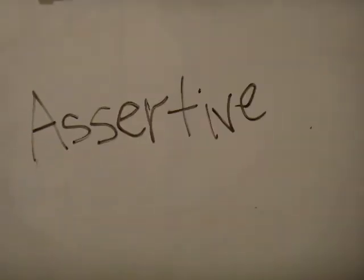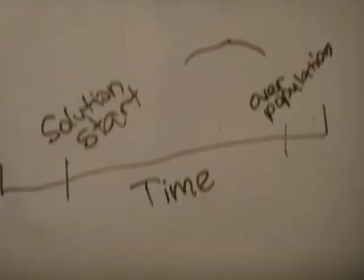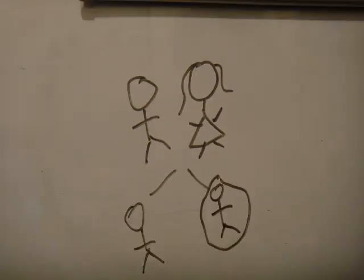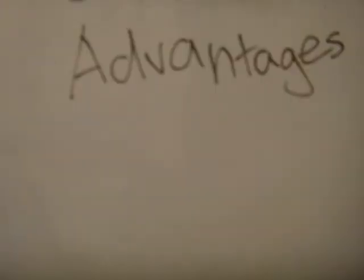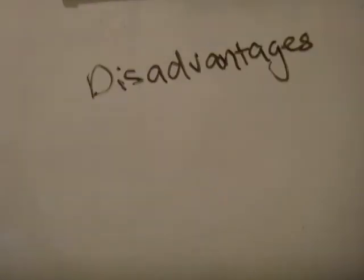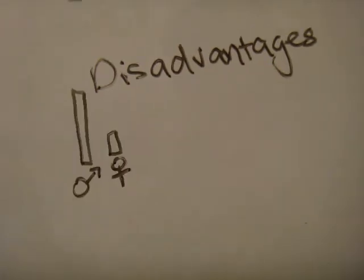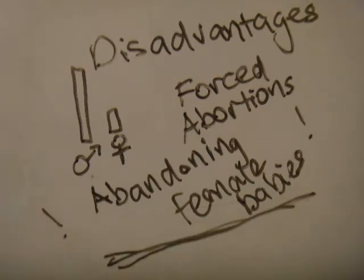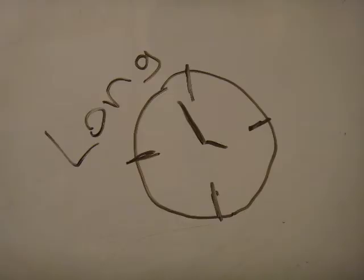Solution 2: Management of birth. This is the assertive one out of the three solutions. This solution should be done in advance of the overpopulation of the world. The solution is to manage the birth rate we have by employing birth limits like one child per family. Advantages: The population will be in check without relocation. Disadvantages: An unbalanced gender rate, forced abortions, and increased rates of abandoning female babies, and it will also take a long time.